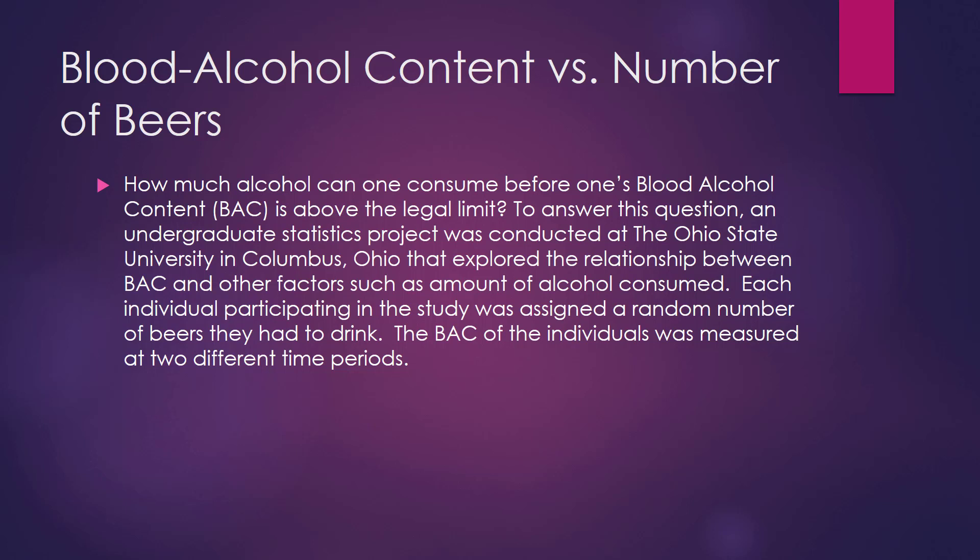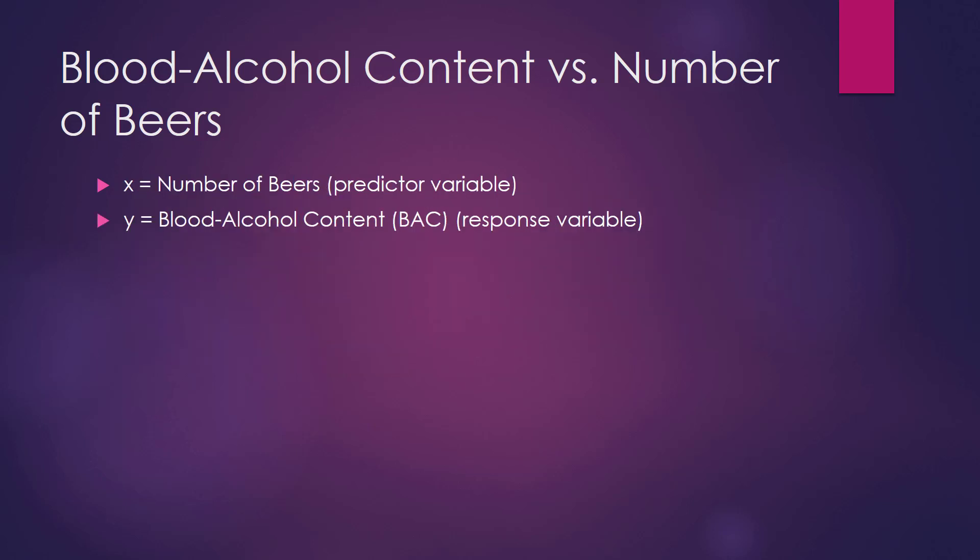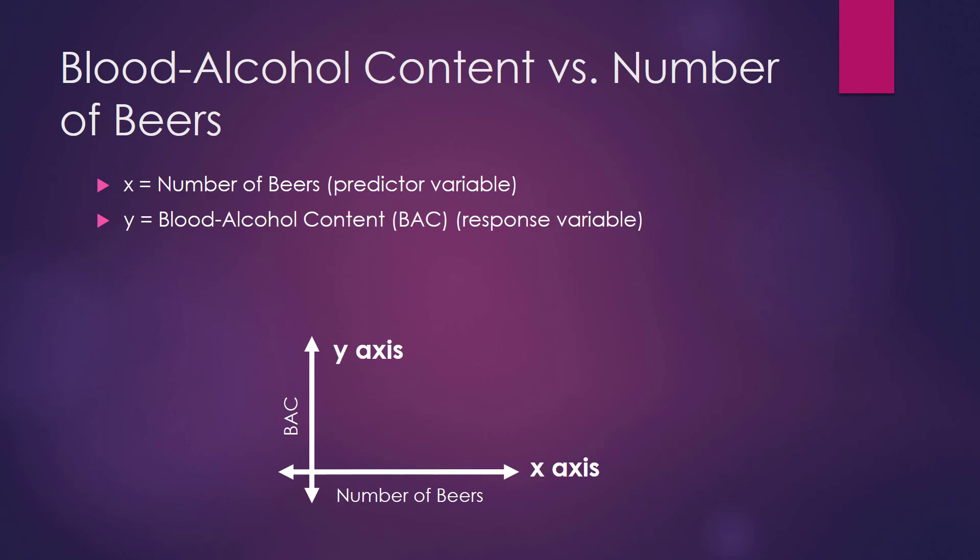Each individual participating in the study was assigned a random number of beers they had to drink. The blood alcohol content of the individuals was measured at two different time periods. In this example, X is the number of beers, or the predictor variable, and Y is the blood alcohol content, or the response variable. To better understand predictor and response variables, please watch my video on scatterplots.